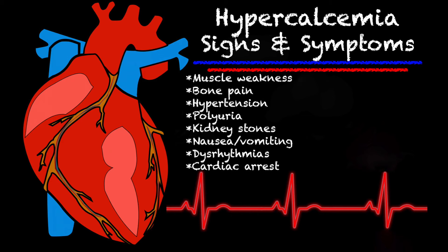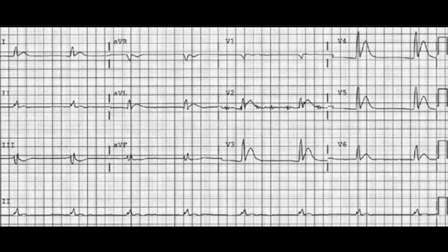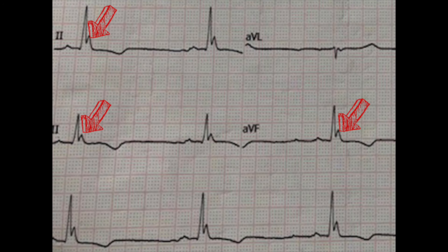Let's take a look at hypercalcemia on a strip. You can see that the QT interval is definitely shortened — you can see it in V1 through V6, they are pretty obvious. And if you look closely, it looks like the P waves have pretty much disappeared, so this is probably a pretty severe case of hypercalcemia. Where the arrows are pointing, those are what we call Osborne waves. They're typically associated with hypothermia, but in extreme cases they are associated with hypercalcemia as well.